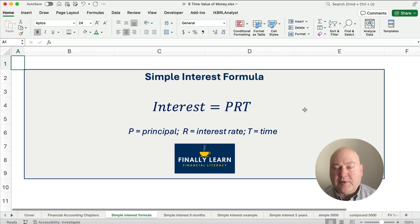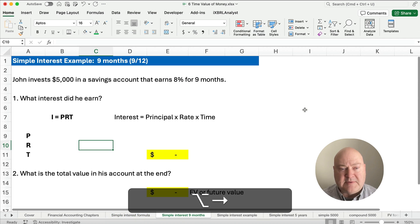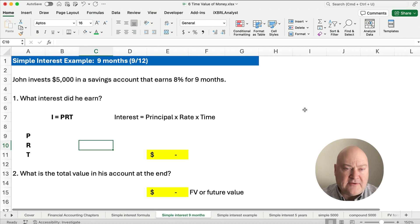Now, what is simple interest? Simple interest is the formula: Interest equals principal times rate times time. A lot of times we use a shorthand that says I equals PRT for principal times rate times time. I've got some problems and examples that I want to show you.